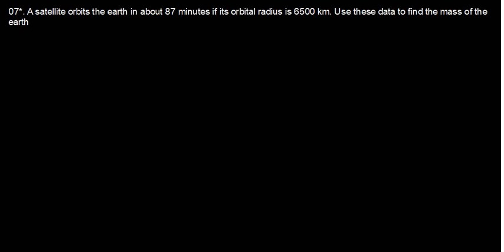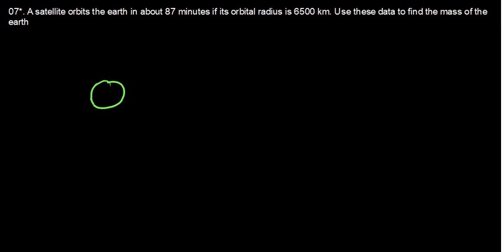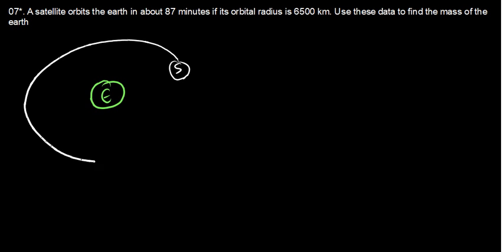Let's come up with the free body diagram. We have the Earth here, and then we have the satellite. This satellite is moving along around the Earth, and they are saying that the distance between the center of the Earth and the satellite is R.